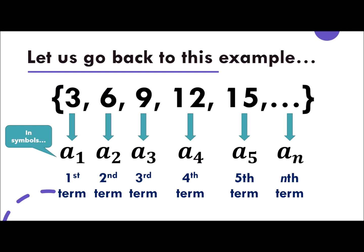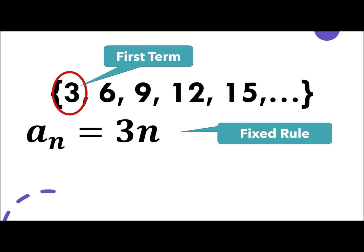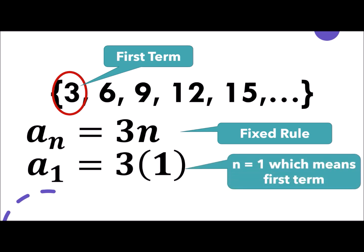Let's proceed. 3, 6, 9, 12, 15 again. 3 now is the first term. A sub n is equal to 3n, and that is the fixed rule. If we will replace n as 1, which means first term, n is equal to 1. We will replace, we will now simplify it as 3 times 1, so that is 3. So that is very clear that the first term is 3.